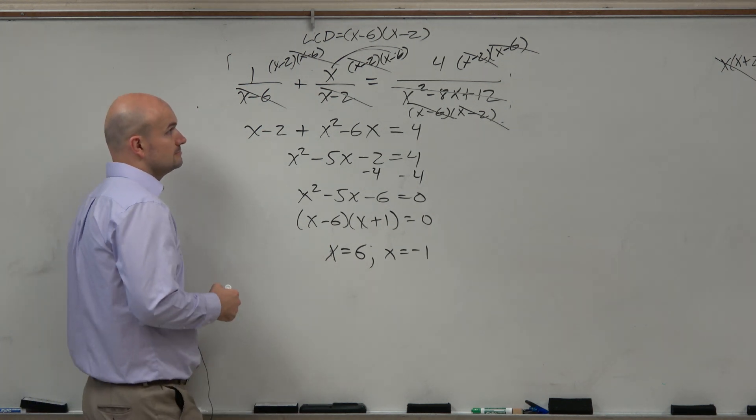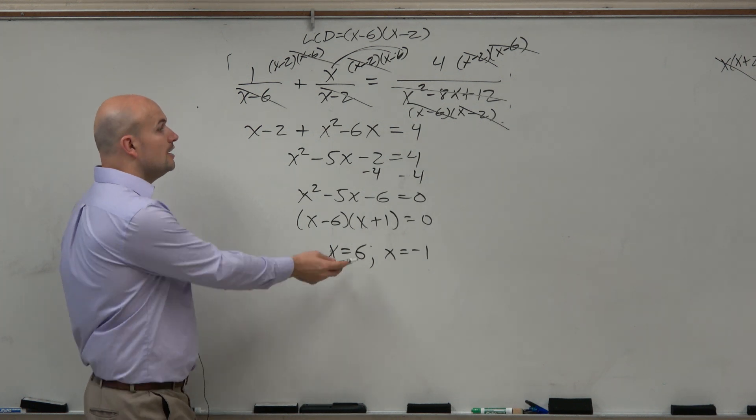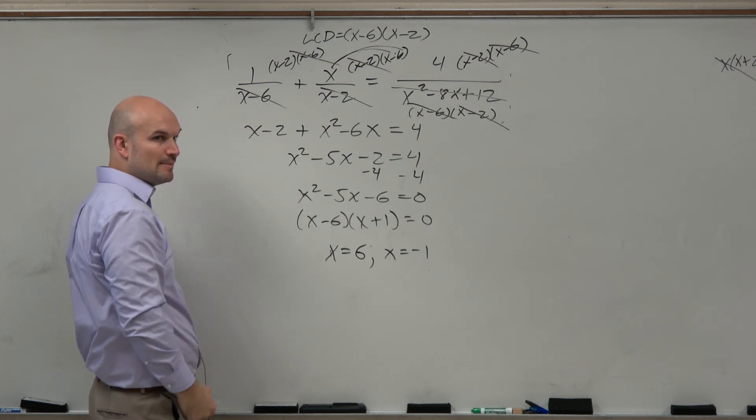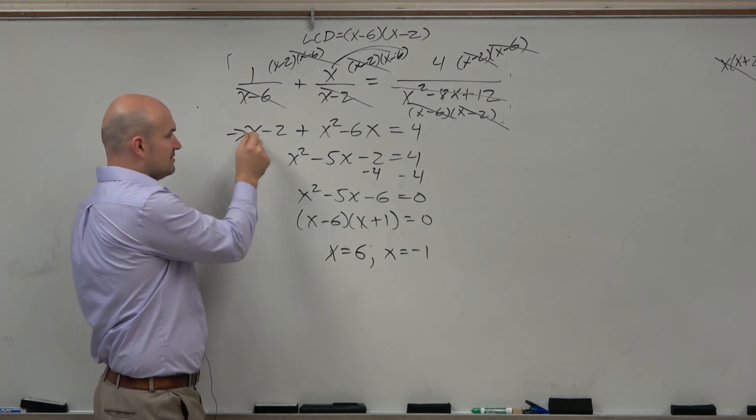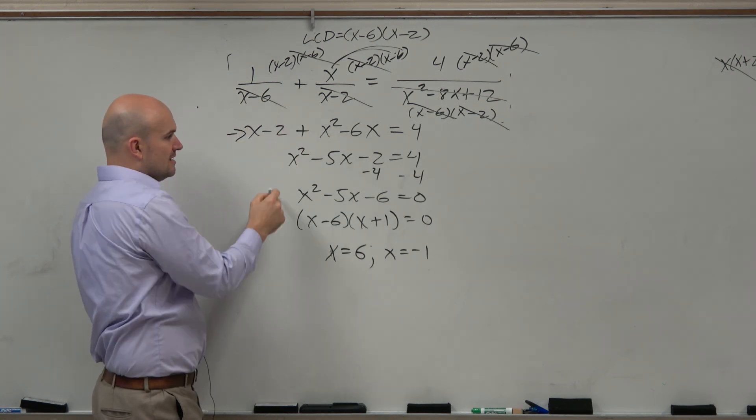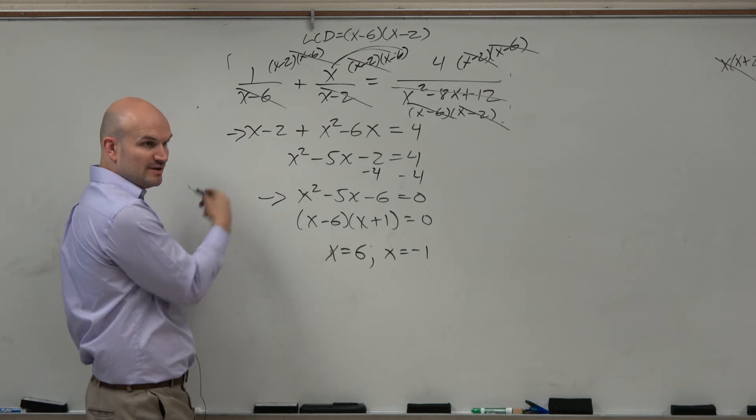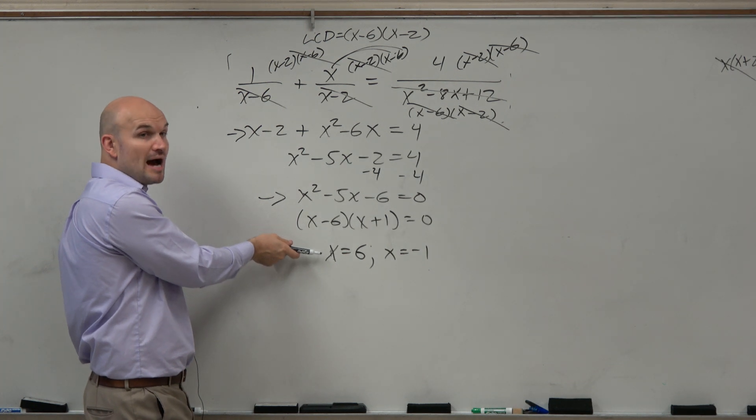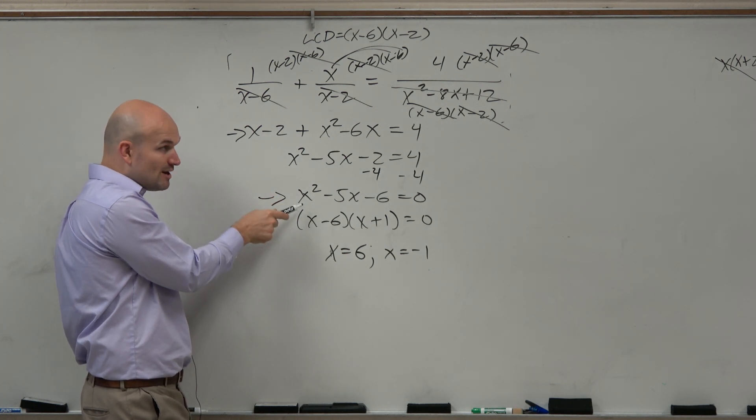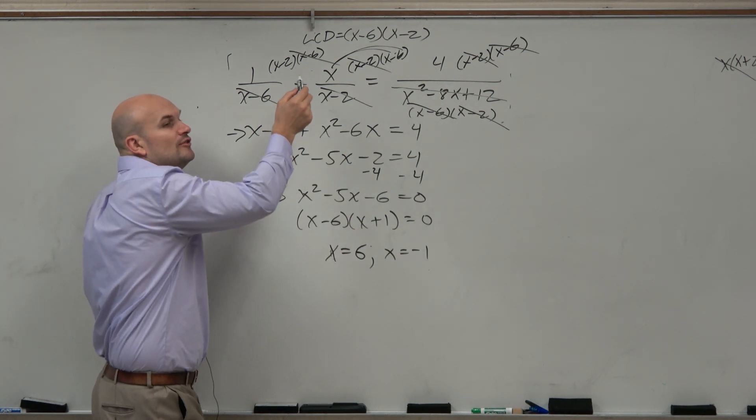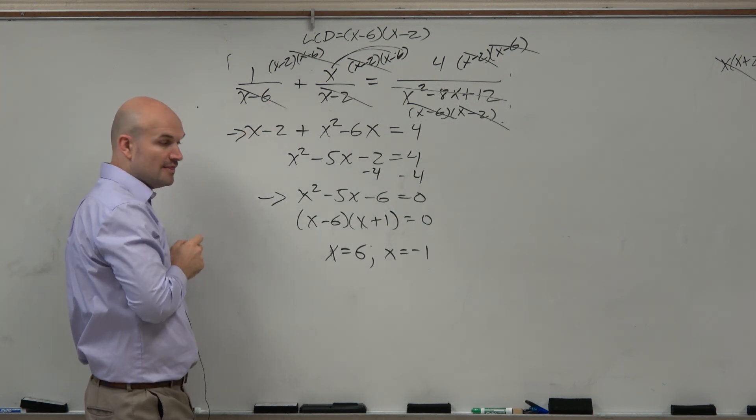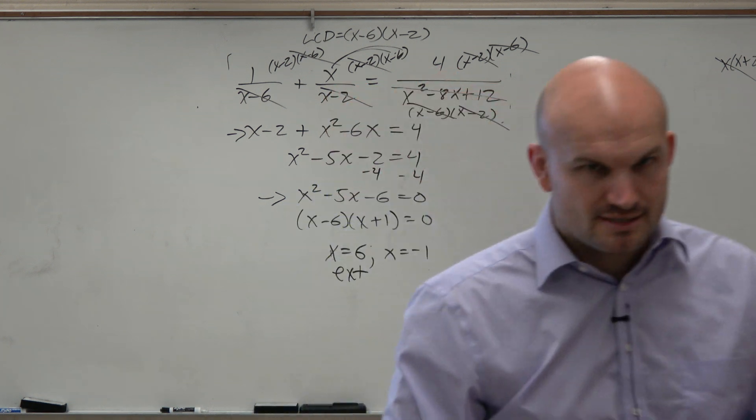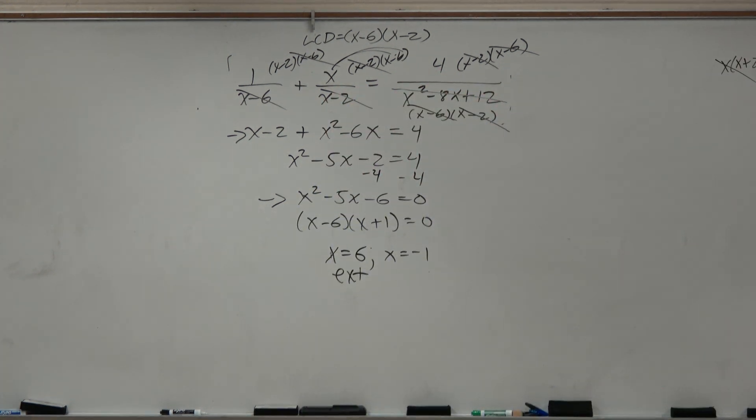This is the simplified version of this. That is a simplified version of that. We just kept on simplifying. You guys agree - the solutions here are 6 and negative 1. The problem is, even though they satisfy this equation, they do not satisfy the original equation. Therefore, x equals 6 is extraneous. See all the detail on that? That's what we have done! Thank you.